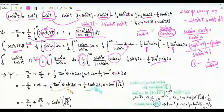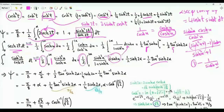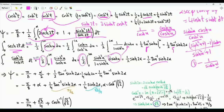Putting everything together, our triple integral psi equals minus pi over 8, plus alpha, plus one-fourth sine 2 alpha, plus one-fourth arctan(sine 2 alpha), where alpha equals cosine inverse of the square root of 3 over 2.